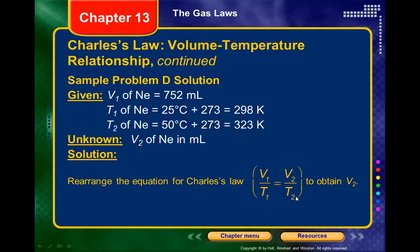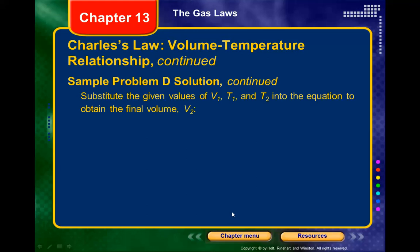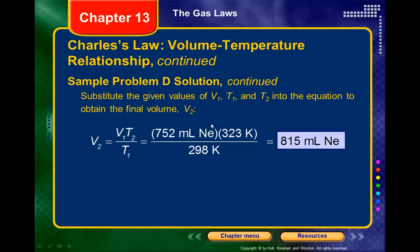To solve for V2, we multiply both sides of V1/T1 = V2/T2 by T2, giving: V2 = V1 × T2 ÷ T1. We know three of these values, so we plug them into the rearranged equation.